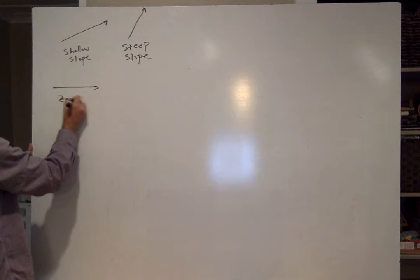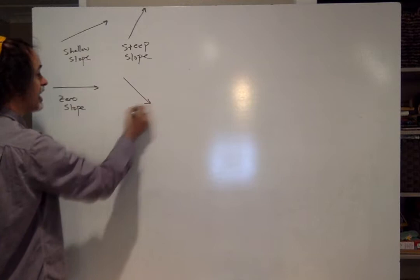Here's one that's flat. This has zero slope. It doesn't go up or down. Here's one that goes down. It has a negative slope.